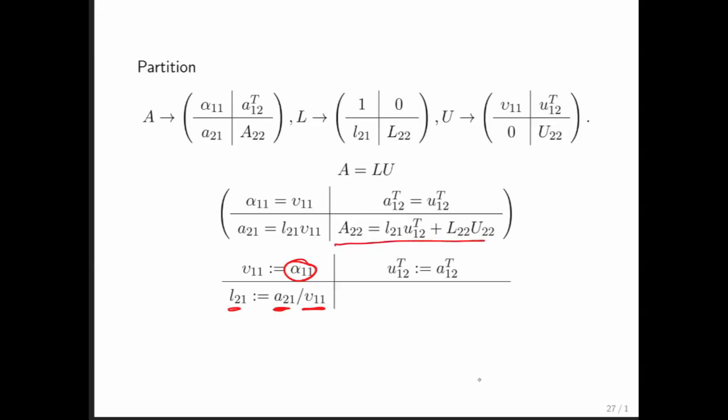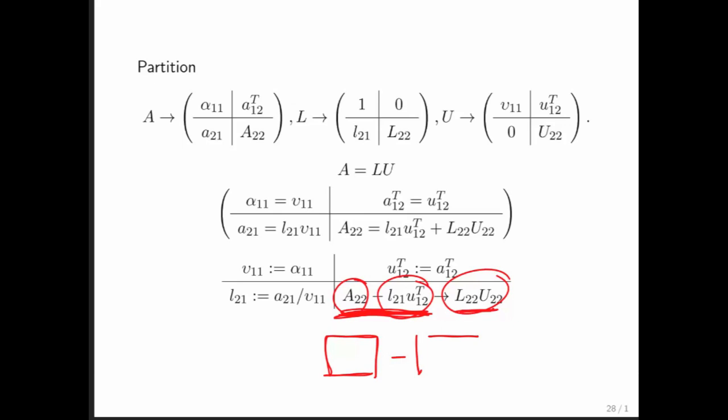Now, by the time we look at this right here, we know what L₂₁ is. We know what U₁₂ transpose is. We know what A₂₂ is. So we can bring everything we know to one side. And what we then recognize is that what's left is to compute L₂₂ and U₂₂. But L₂₂ is a unit lower triangular matrix. U₂₂ is an upper triangular matrix. So all it says is, once you update A₂₂ by subtracting off L₂₁ U₁₂ transpose, what you want to do is proceed and find the LU factorization of that smaller matrix. Notice that this is a very special operation. It's a matrix from which you subtract a column vector times a row vector. A column vector times a row vector is an outer product. When you update a matrix with a multiple of an outer product, we call that a rank-1 update.